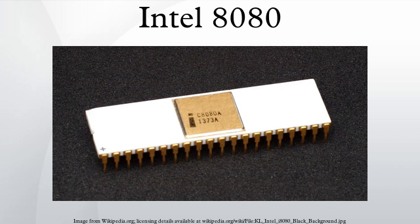The 8080 and 8085 gave rise to the 8086, which was designed as a source-compatible extension of the 8085. This design in turn later spawned the x86 family of chips, the basis for most CPUs in use today.